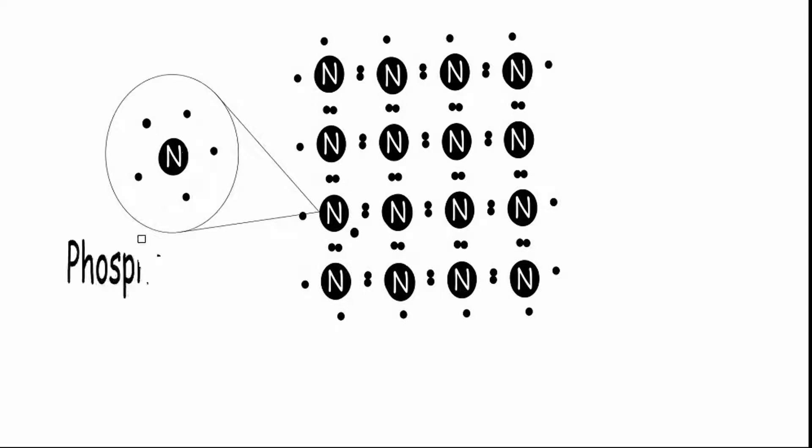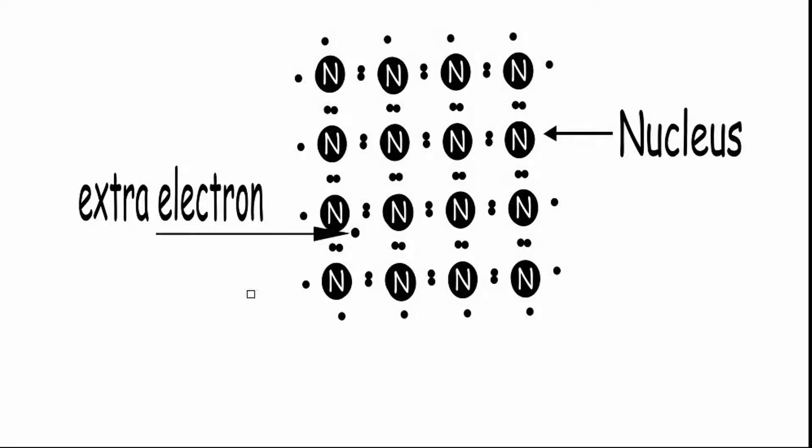Phosphorus atom is used to make N-type semiconductor. It contains more electrons on an outermost orbit than silicon. These extra electrons are free to move around.